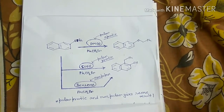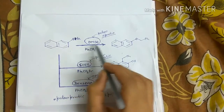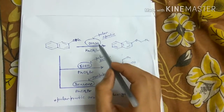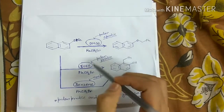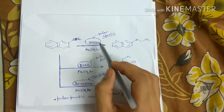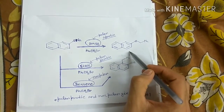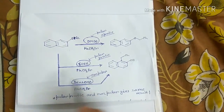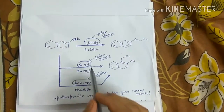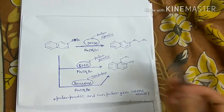In DMSO, which is a polar aprotic solvent — meaning it is polar but has no hydrogen atoms — in polar aprotic solvents like DMSO or DMF, O-alkylation occurs; that is the major product.